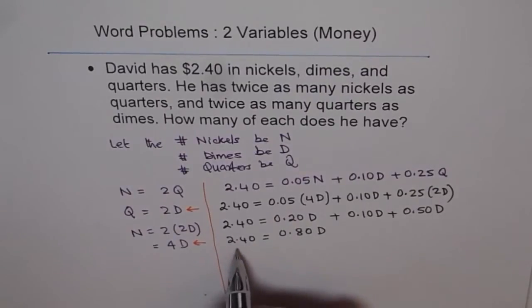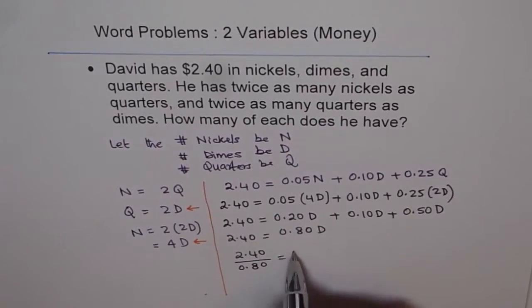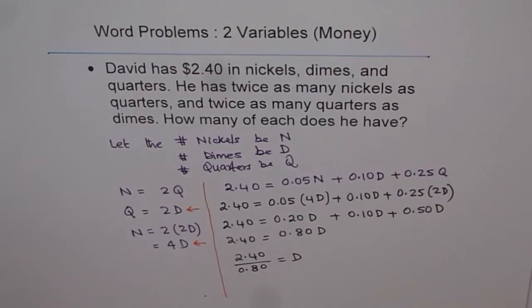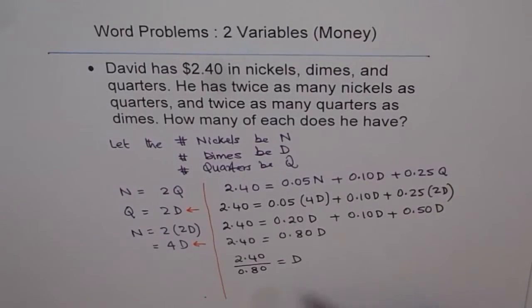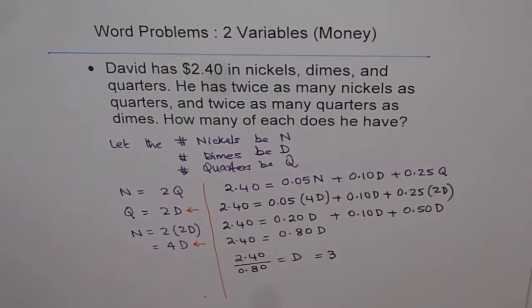Now to find D, we divide by 0.80. So 2.40 divided by 0.80 equals the number of dimes. You can use your calculator, or just note that 8 goes into 24 three times. So D equals 3. We get 3 dimes.